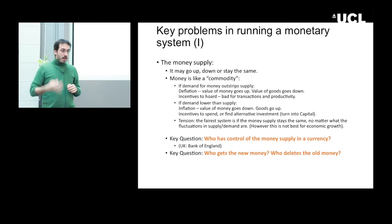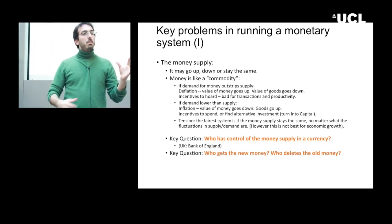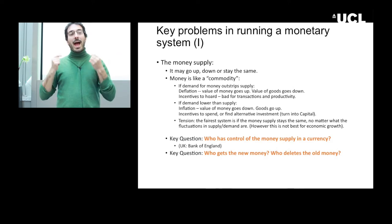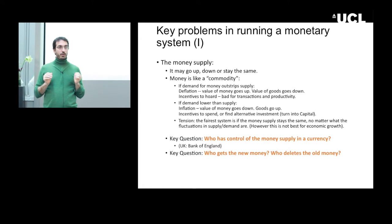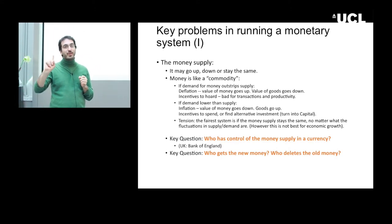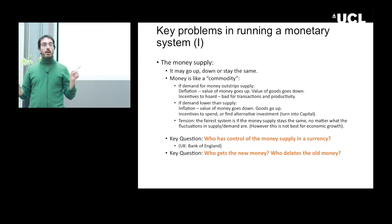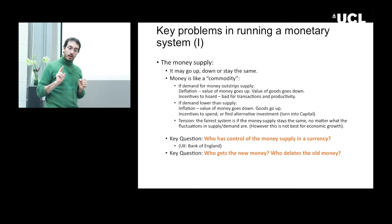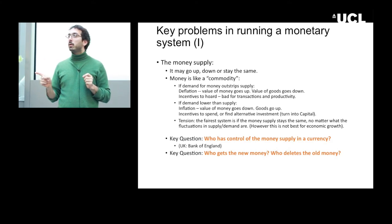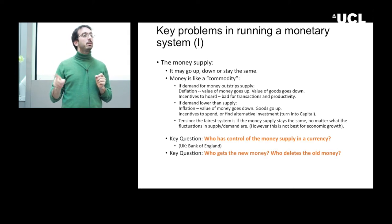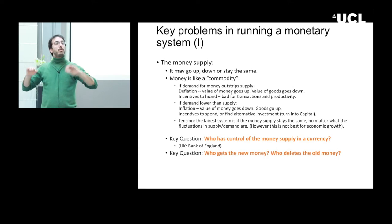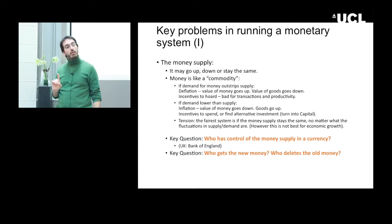A second question is: if the money supply increases or decreases, how do we determine which money goes out of circulation, or to whom goes the new money? That's a very important question — who gets richer or poorer according to our online currency? In the actual economy, when money is made, the banks get richer. Actual loans are extended to banks and then to companies; the difference goes to the banks.